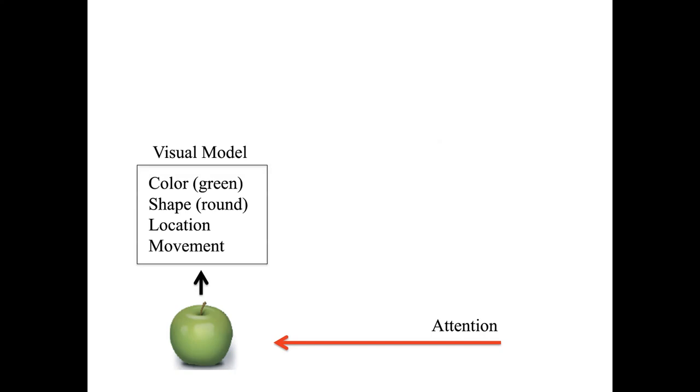Suppose you're looking at an apple. You're paying at least some attention to it. Your visual system constructs a model of it. The model is a bundle of visual information about the apple, including its color, its shape, its location, and so on.